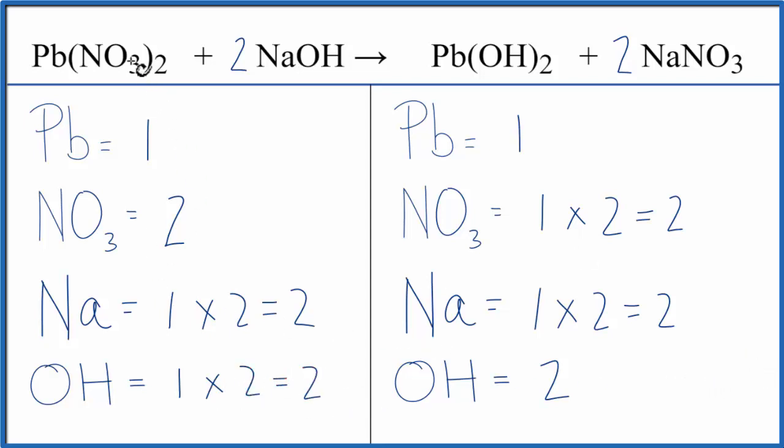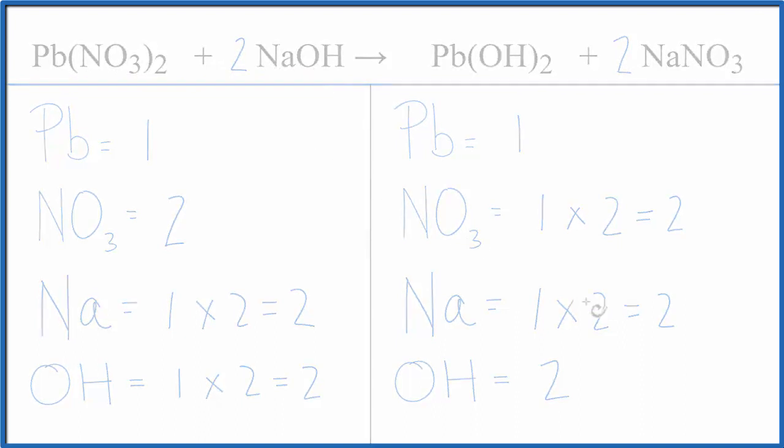You can see that when we have polyatomic ions, the same ones on each side of the equation, we can count them as just one item. That makes the balancing a lot easier. This is Dr. B with the balanced equation for lead 2 nitrate plus sodium hydroxide. Thanks for watching.